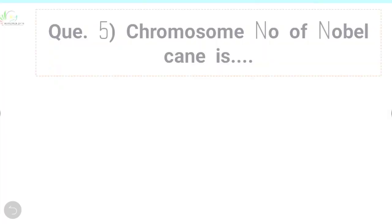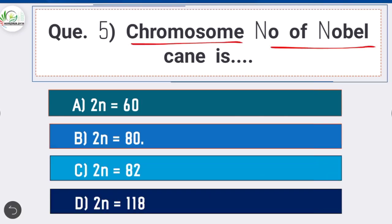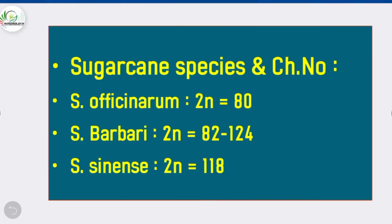Question 5: Chromosome number of noble cane is — option B is correct: 2n = 80. Tropical cane, also known as noble cane, has botanical name Saccharum officinarum and chromosome number 2n = 80.